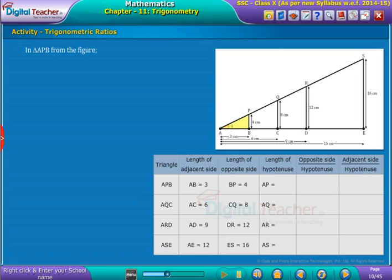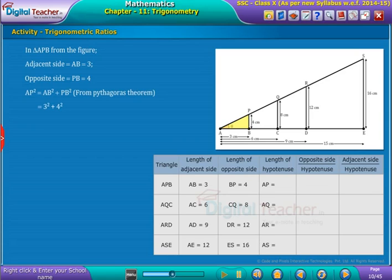In triangle APB, we know adjacent side AB equals 3 cm and opposite side PB equals 4 cm. Using Pythagoras theorem, we substitute values of AB and PB to get the value of hypotenuse AP. Therefore, we obtain AP equals 5 cm.